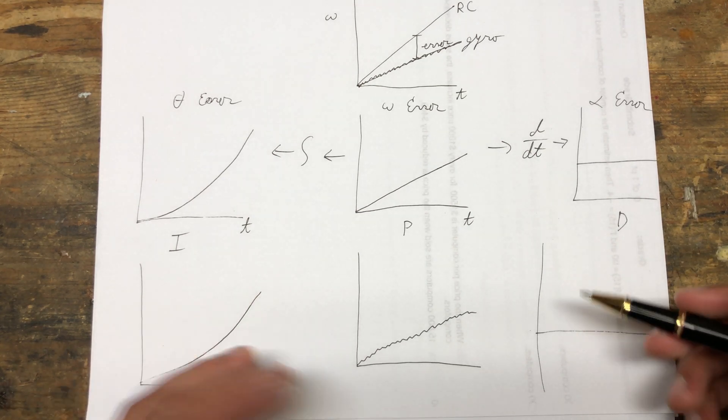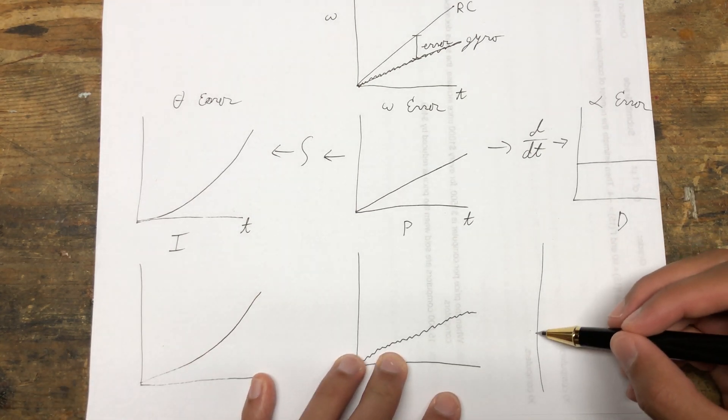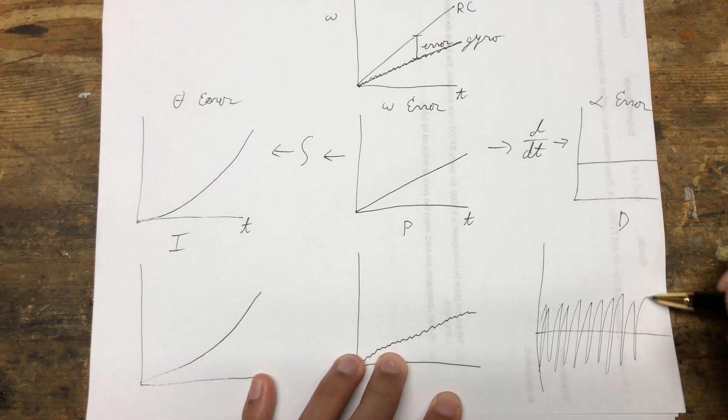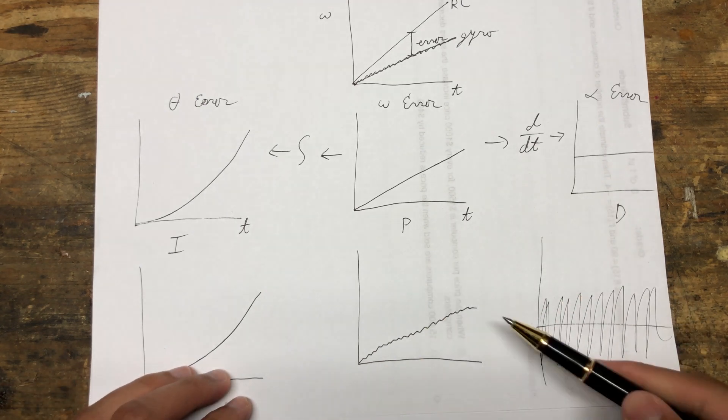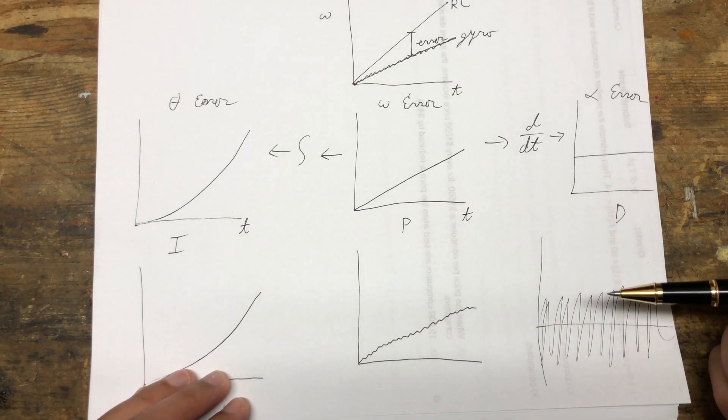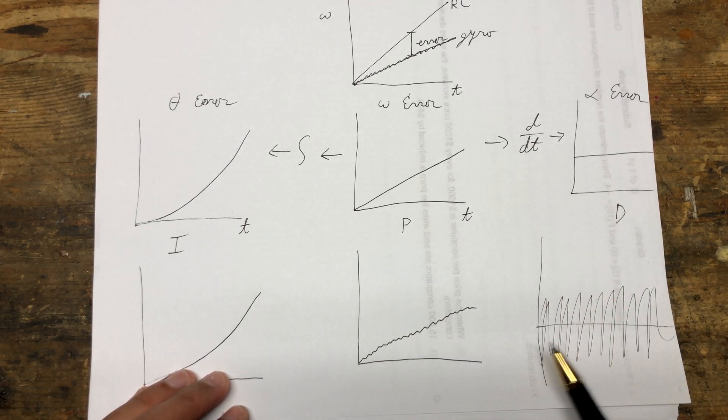When we plot that, it looks crazy. When you take the derivative, it amplifies noise. This is the potential problem with the D-term.